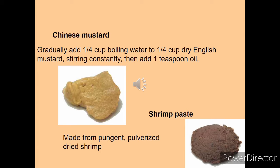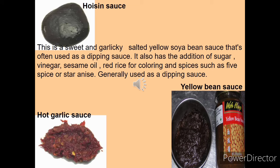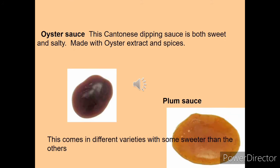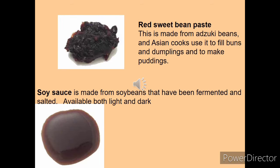Chinese mustard and shrimp paste, made from pulverized dried shrimp, are also used. Hoisin sauce is one of the most important sauces — a sweet and garlicky salted yellow soybean sauce often used as a dipping sauce. Hot garlic sauce, yellow bean sauce, and oyster sauce are also used. Oyster sauce is a Cantonese dipping sauce available in both sweet and salty versions made from oyster. Plum sauce, made from plums, is generally sweet in taste. Red sweet bean paste and soy sauce are used for making different types of noodles and chow mein.